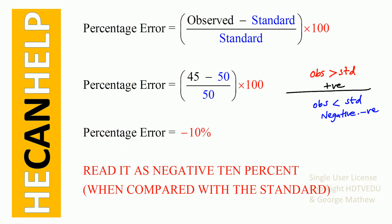Ideally, we want percentage error to be zero, in which case standard and observed should be the same. To summarize: if observed equals standard, percentage error is zero. If observed is greater than standard, percentage error is positive. If observed is less than standard, percentage error is negative.